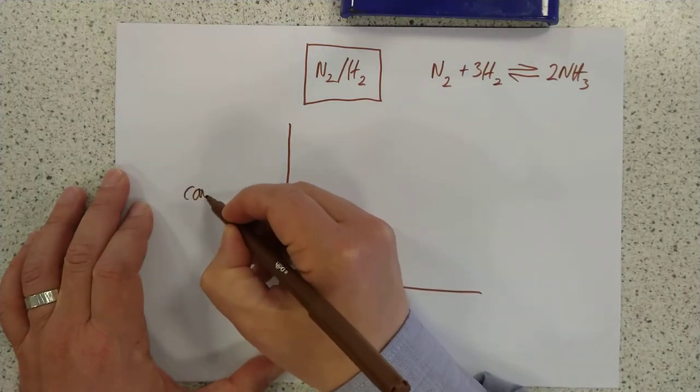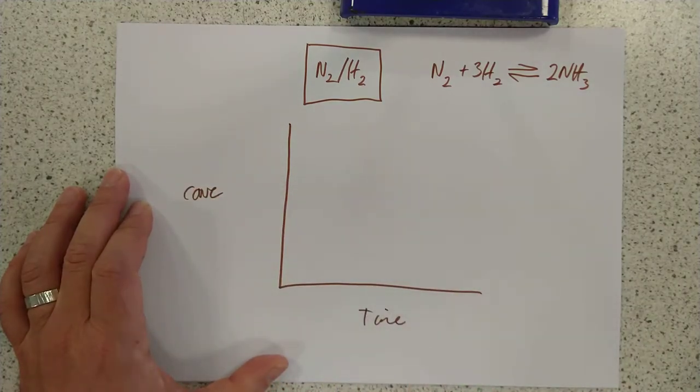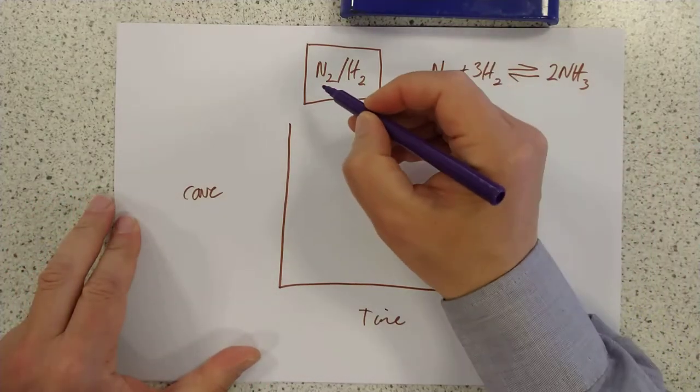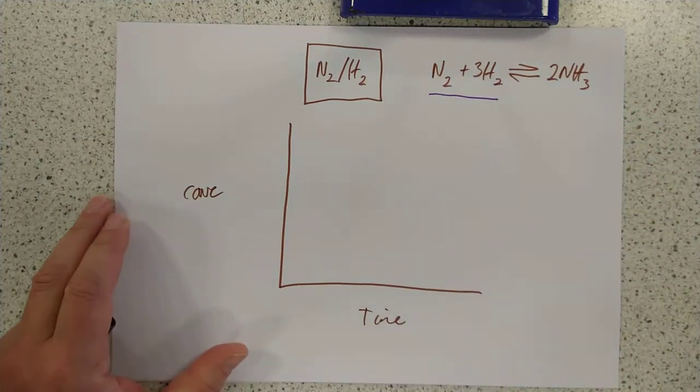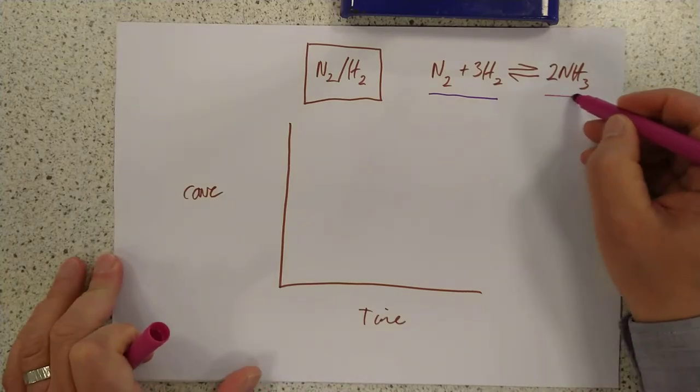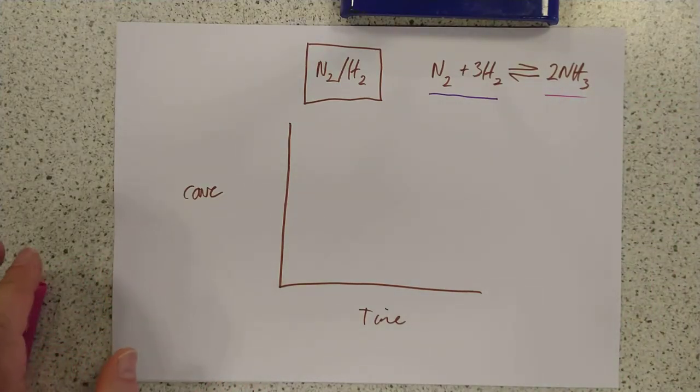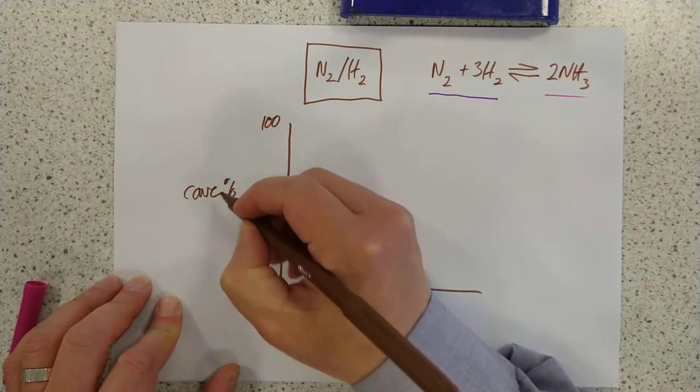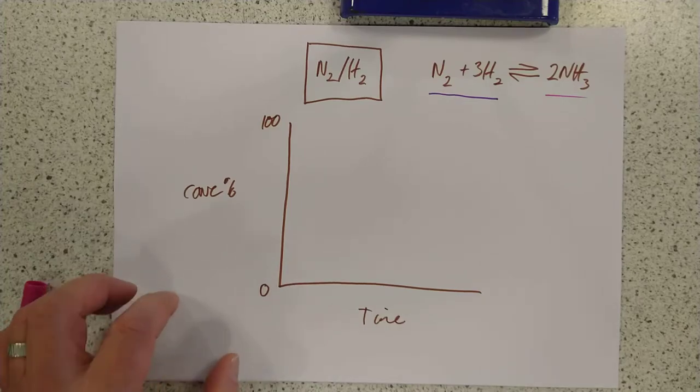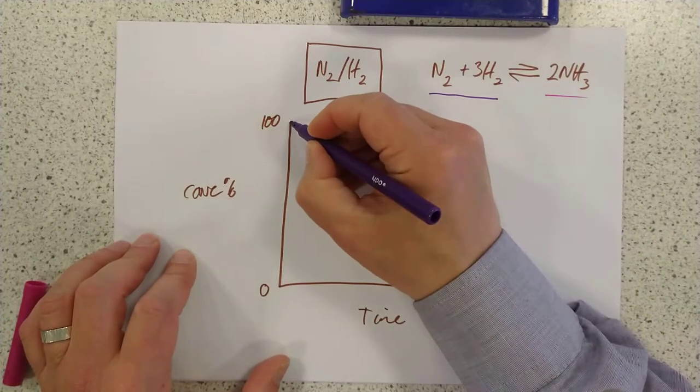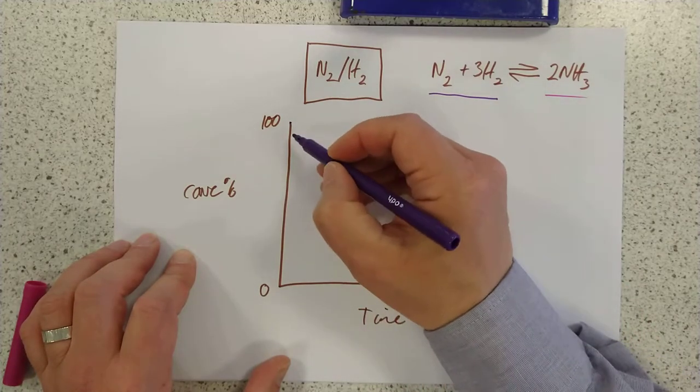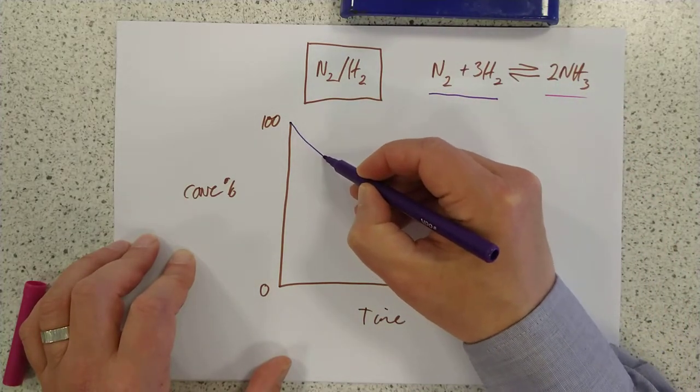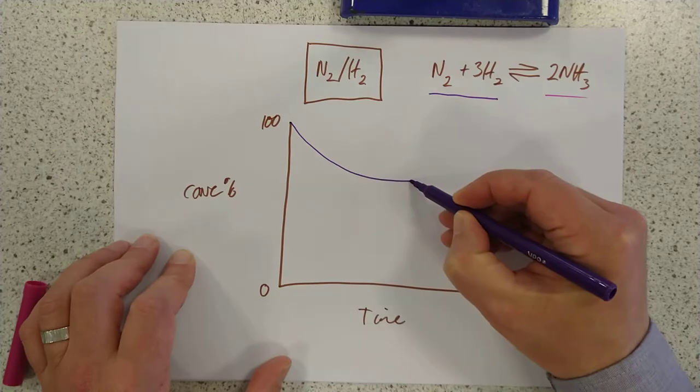But if we were to plot concentration against time, you would find something like this. Let's do the nitrogen and hydrogen in purple, and let's do the ammonia concentration in this nice pink color. So, if the concentration goes from 0 to 100%, then at the start, obviously, in your box, you've only got nitrogen and hydrogen. So, therefore, we start with that, 100% of this stuff. As these two start to react together to form this, then their concentrations will drop over time, and you'll get a curve that looks something like this.